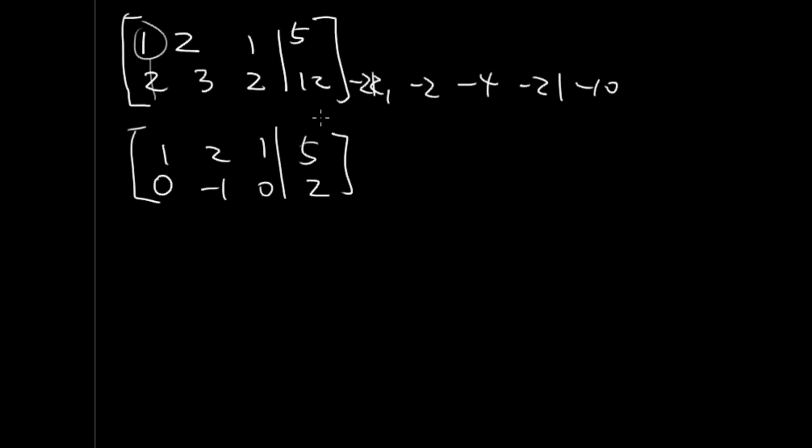Row 1 stays the same. I'm going to go ahead and take this times negative 1. We have 0, 1, 0, negative 2.